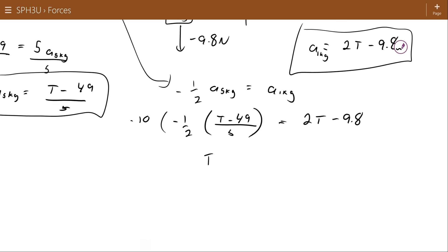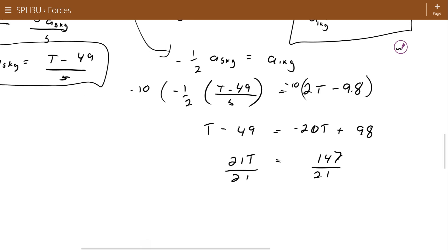So if I multiply by negative 10, I'm going to have T minus 49 over here, and this is going to turn into negative 20T plus 98. I'll bring the 49 over here, and it will become 147 on this side. I'm going to bring the 20T this way, and it will become 21T. I'm dividing both sides by 21. I get a tension of 7 newtons.